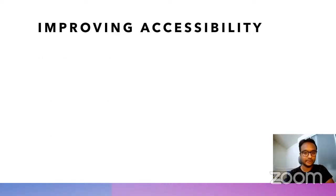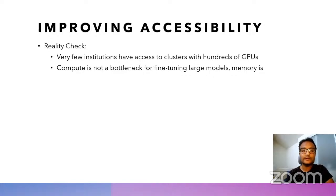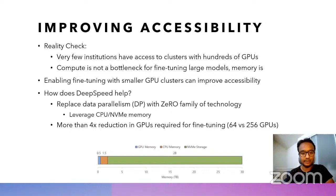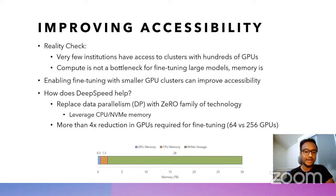From an accessibility point of view, very few institutions actually have access to clusters with hundreds of GPUs required to train or fine-tune a model with hundreds of billions of parameters. At this scale, for fine-tuning, compute is not really a bottleneck, but memory is. So DeepSpeed can replace the data parallelism in 3D parallelism with the Zero family of technology. Zero provides not just a more memory-efficient version of data parallelism, but it can also leverage CPU and NVMe memory. On modern GPU clusters, each node can have more than four times the CPU and NVMe memory than GPU memory, so it can reduce the number of GPUs required by a similar proportion.